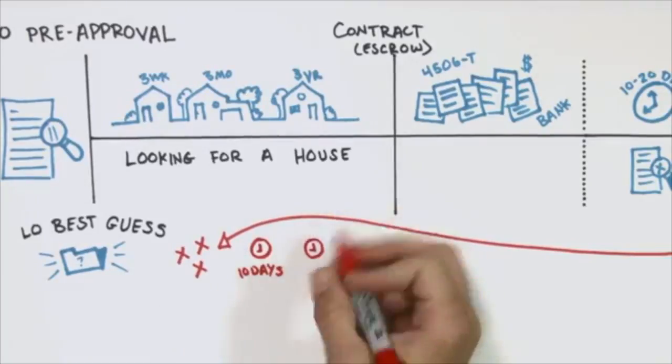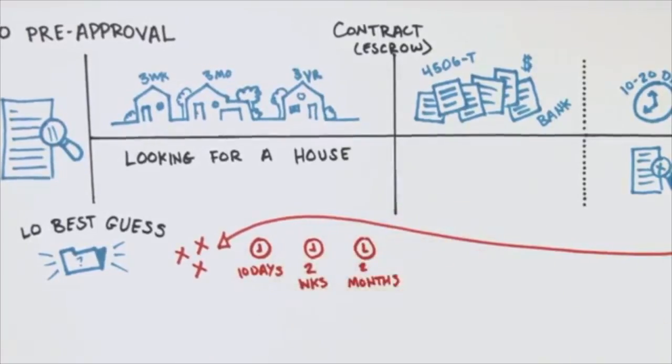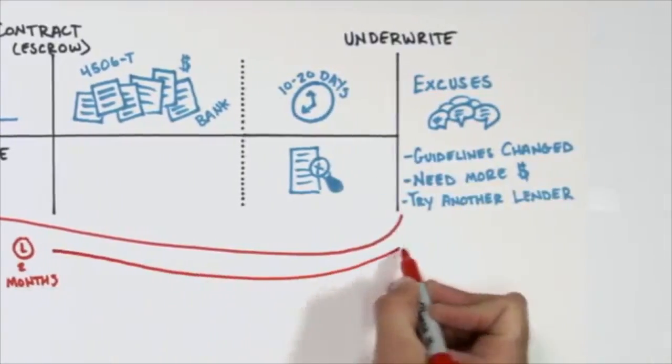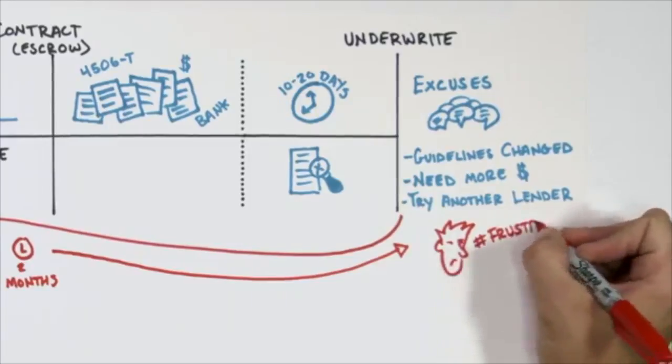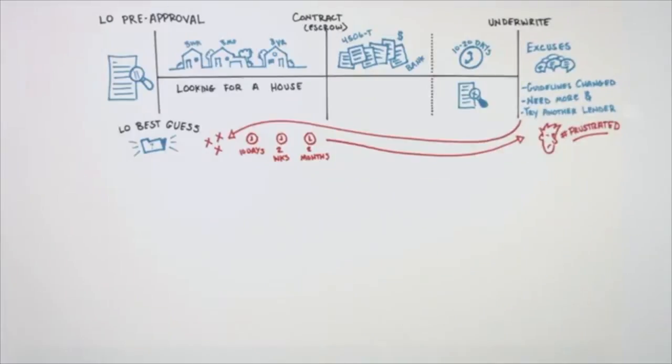Now you have anywhere from 10 days to two weeks to two months where everything has to be restructured and reworked because the loan officer made an honest mistake, and you do not have a referable experience at the end of the transaction because the client is frustrated. The client did not get served.